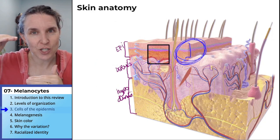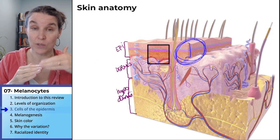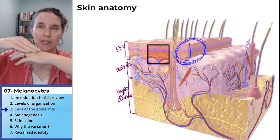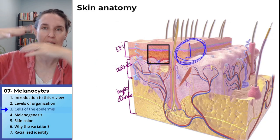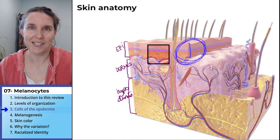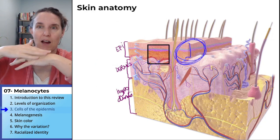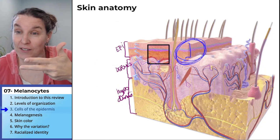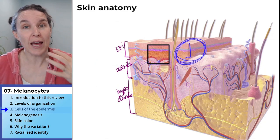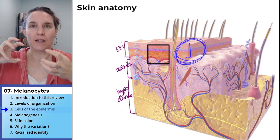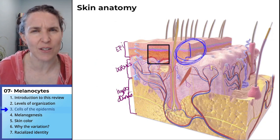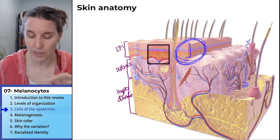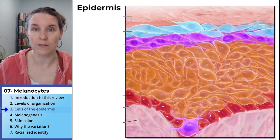Epithelial tissue — epithelial tissues line spaces. Do you agree your skin is lining a space? Like, outside of you is this space that is not your skin. So stratified squamous epithelial tissue — we can dissect the term and have a sense of what that actually means. Let's zoom in and take a closer look at this stratified squamous epithelial tissue.